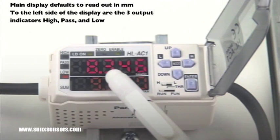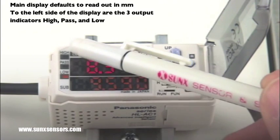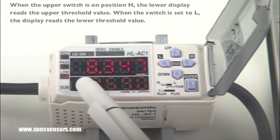The main display on the controller defaults to read out in millimeters. To the left side of the display are the three output indicators: high, pass, and low.